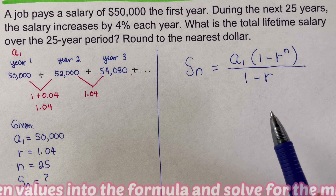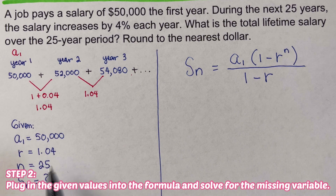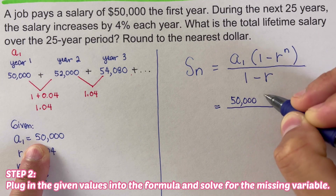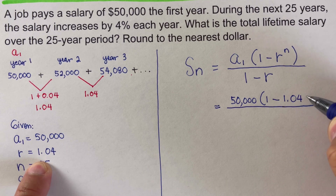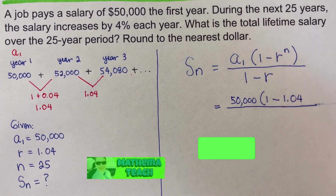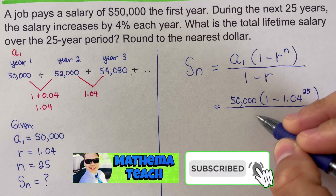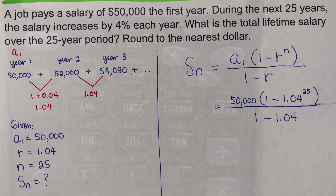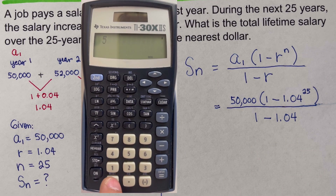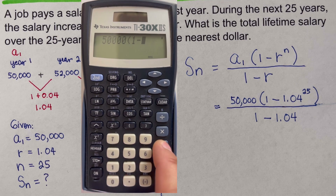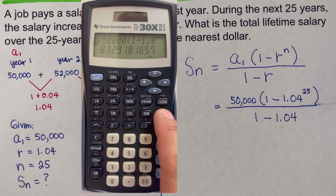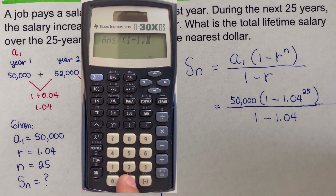The second step is to plug the values into the formula and solve for the missing variable, S sub n. So we write: S sub n = 50,000 × (1 − 1.04^25) / (1 − 1.04). Using a calculator, we enter: 50,000 × (1 − 1.04^25), close the parentheses, hit equals, then divide by (1 − 1.04).